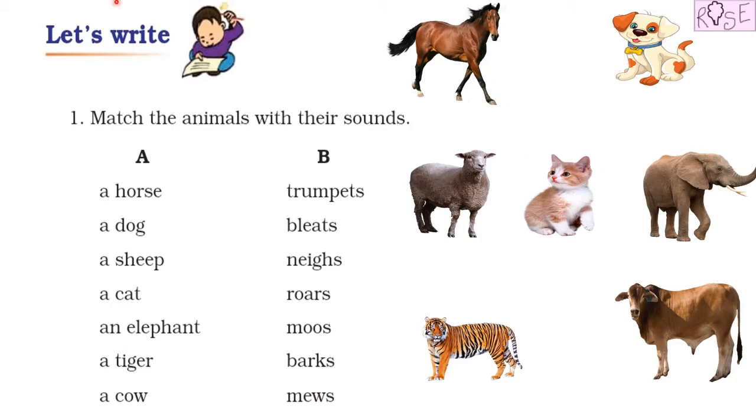So let us see what we have to do in this activity. Let's write: match the animals with their sounds. In column A, a list of animals have been given to us, and in column B we are provided with the sound they make, but they are not in the correct order.